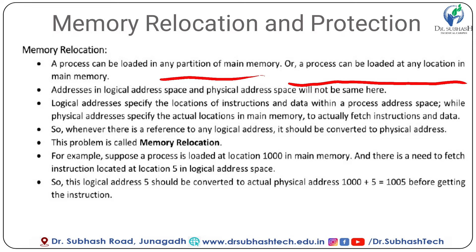For example, suppose a process is located at location 1000 in main memory, and there is a need to fetch an instruction located at location 5 in the logical address space. The logical address space starts at location 5. So this logical address 5 should be converted to the actual physical address: 1000 plus 5, which is 1005, before fetching the instruction.